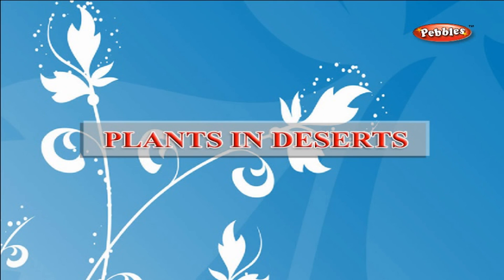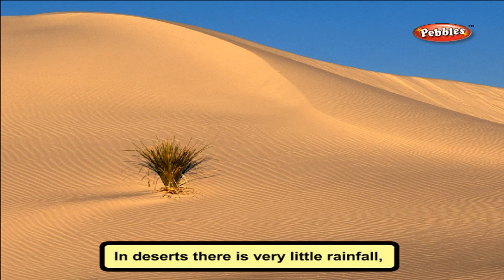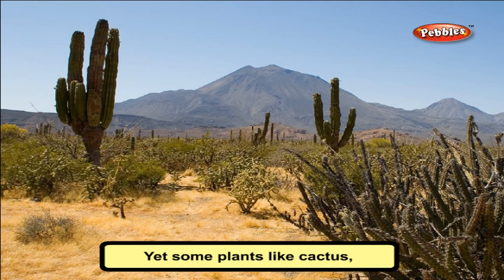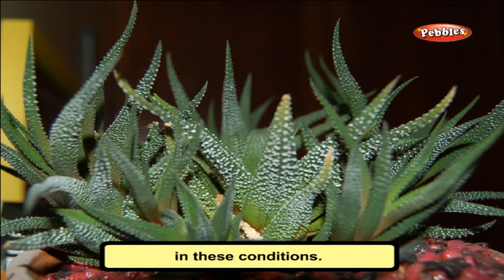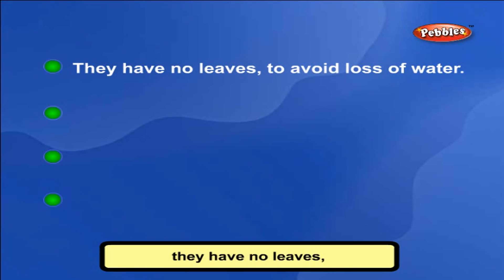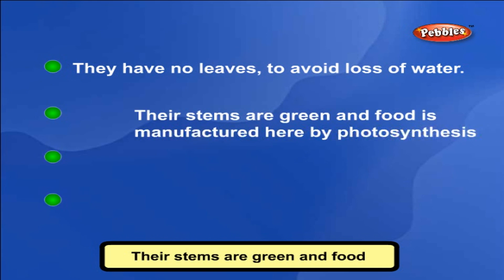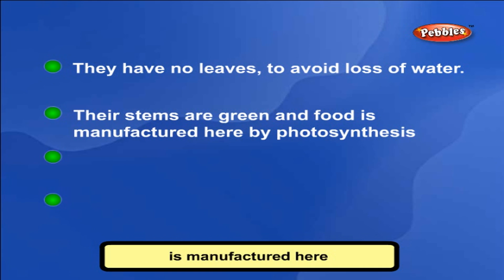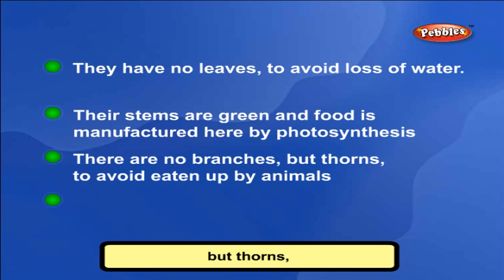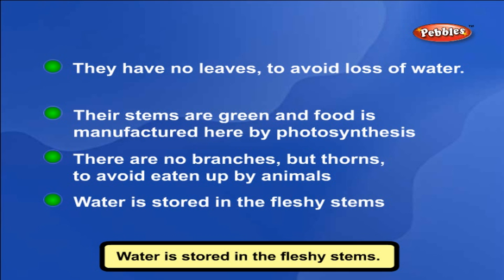Plants in Deserts: In deserts there is very little rainfall. The climate is very hot and the soil is sandy. Yet some plants like cactus and date palms have adapted themselves to survive in these conditions. Cactus has no leaves to avoid loss of water. Their stems are green and food is manufactured by photosynthesis. There are no branches but thorns to avoid being eaten by animals. Water is stored in the fleshy stems.